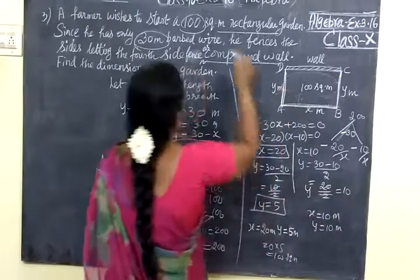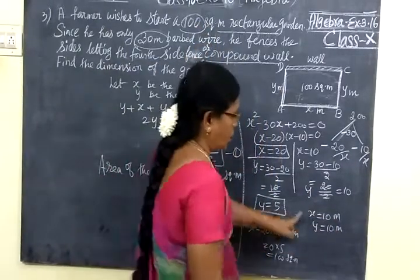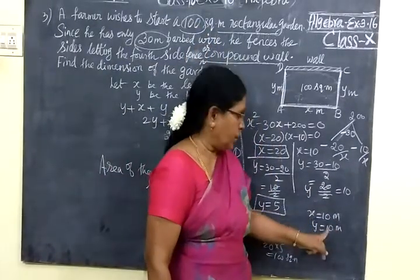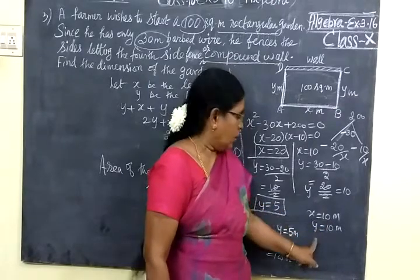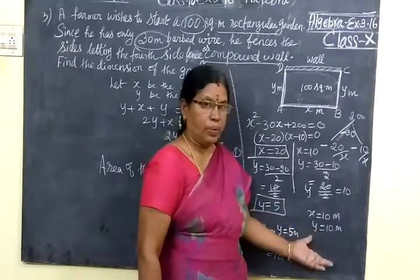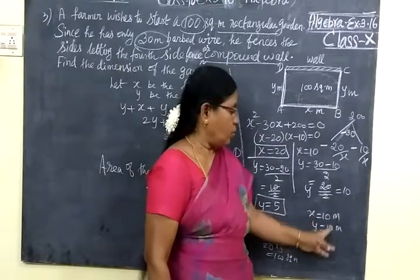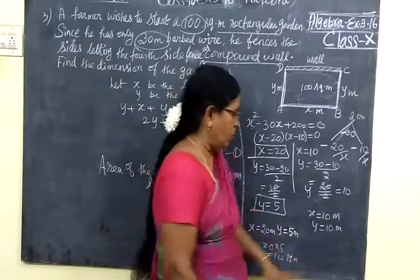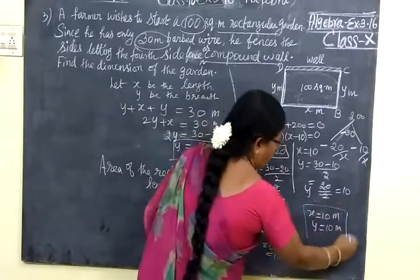10 into 10, 100. Therefore, the length of the rectangle is 10 and breadth of the rectangle. That means here it becomes a square because both dimensions are same. So it becomes a square.